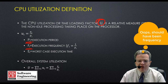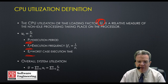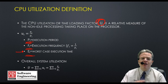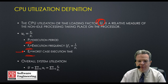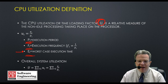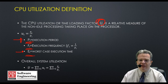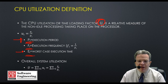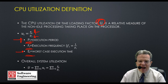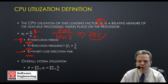We look at the worst-case execution time, which is essentially how long it takes to execute a given thread or task under the absolute worst case. We take the period and ask what is the relationship between the worst-case execution time and the period. For example, if a task was supposed to run every 10 milliseconds and under worst-case took 2 milliseconds to run, we would say that task has a utilization of 20%.